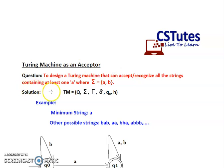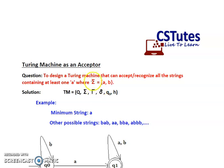The objective of this video is to design a Turing machine that can accept or recognize all the strings containing at least one A, where the input alphabet Σ is given as {A, B}.